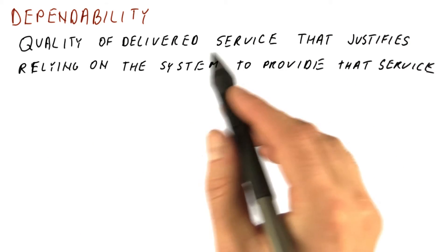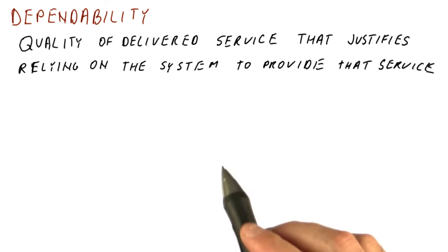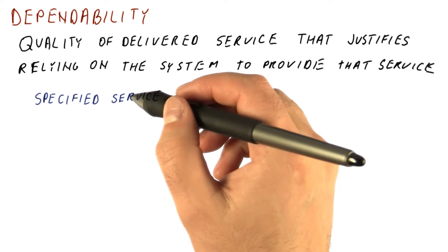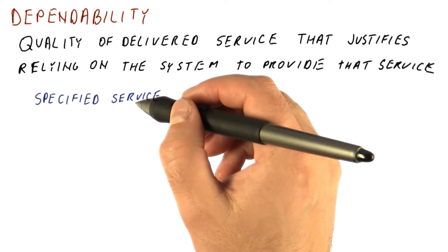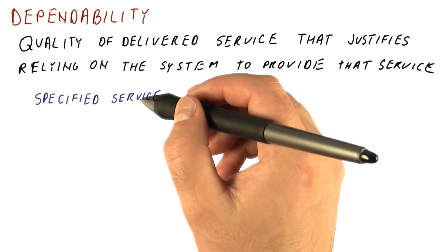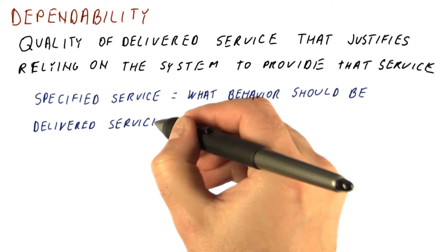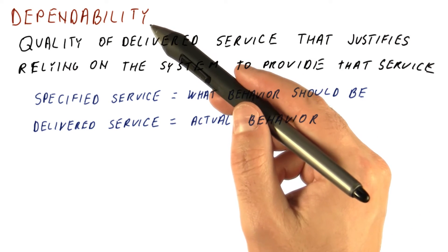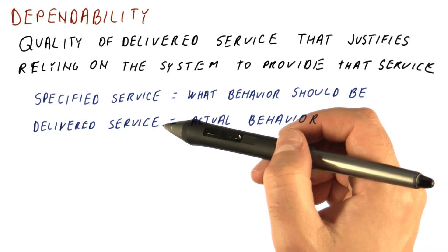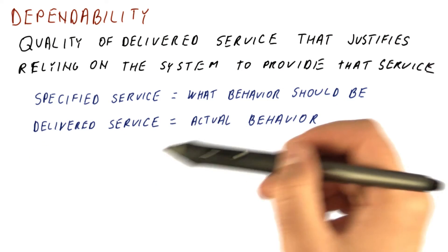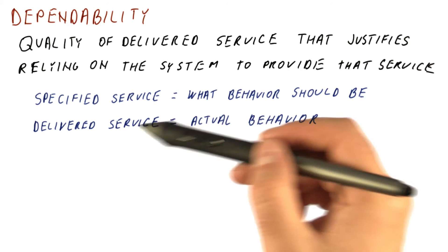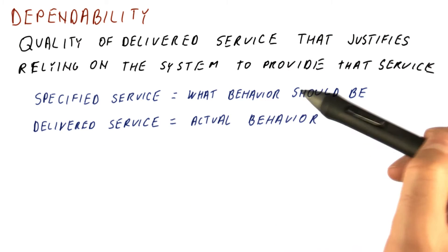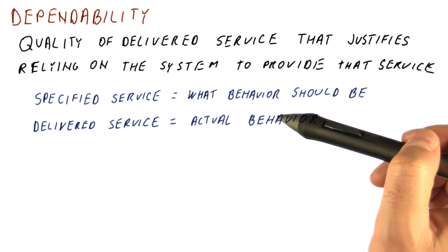The service actually has two definitions. One is the specified service, which is what the behavior of the system should look like. And then we have delivered service, which is the actual behavior — the behavior we actually got out of the system. So dependability is really about: can we expect the delivered service to match the specified service? Can we get what we are supposed to be getting from the system?